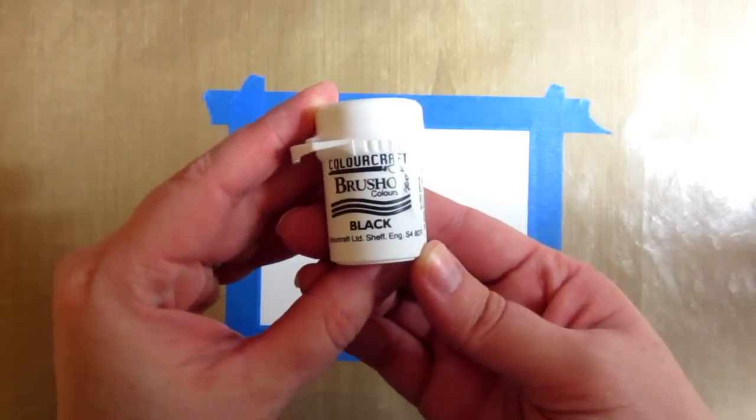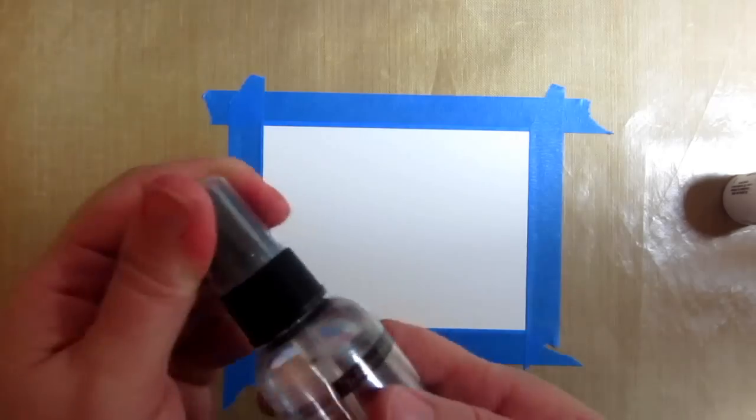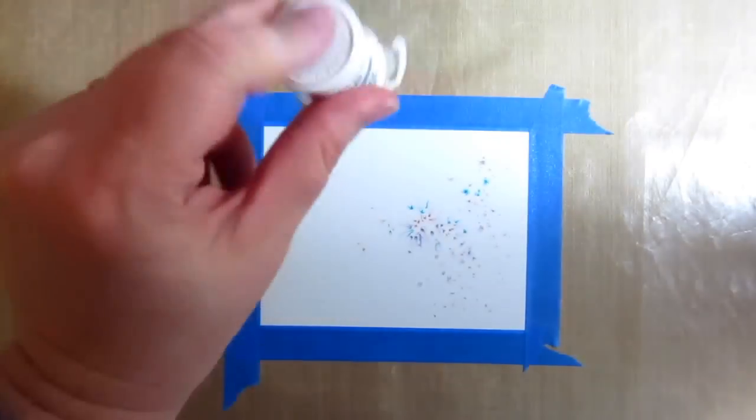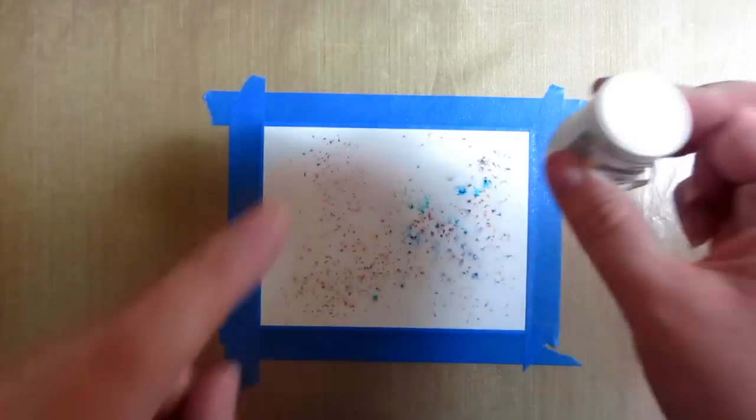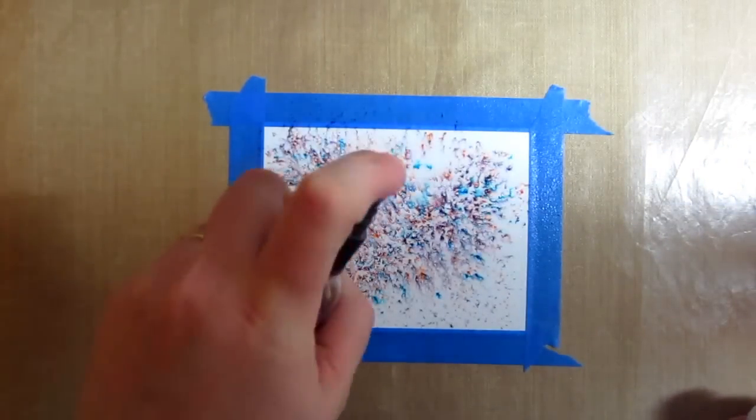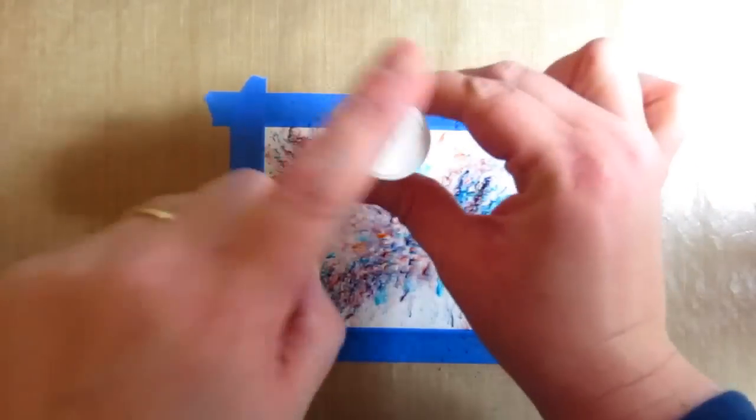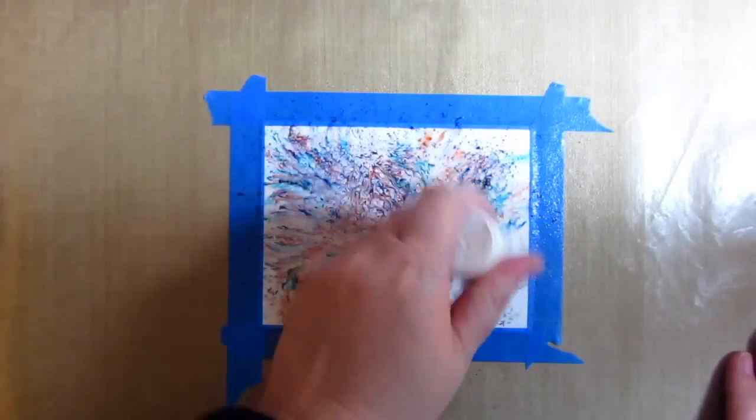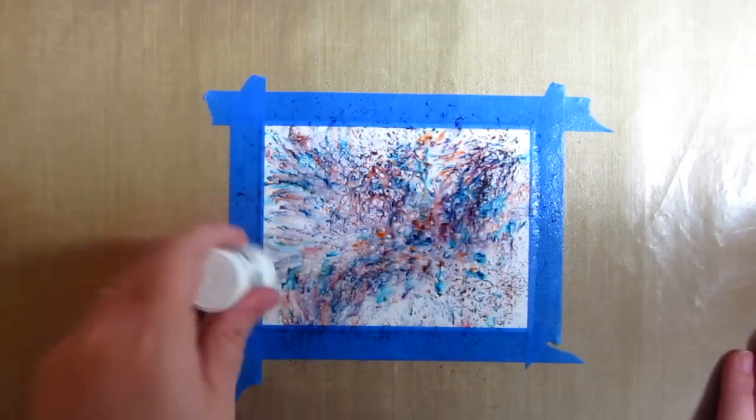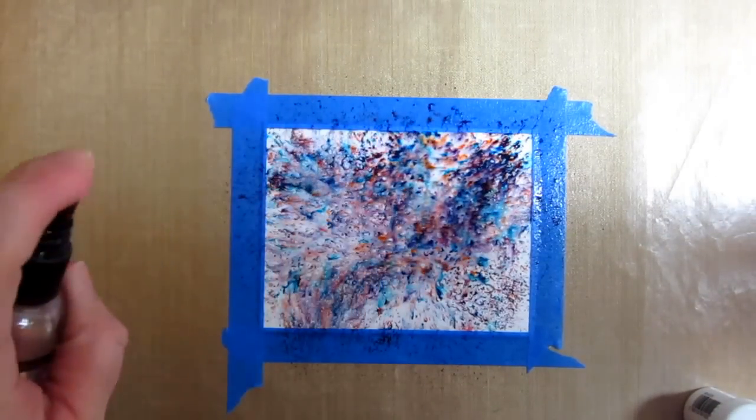I've taped a piece of Tim Holtz watercolor cardstock down to my craft mat with some painter's tape. Now I'm going to take this black Brusho and a mini mister, and I'm going to give my paper a good spritz. Then I'm going to begin tapping the pigment onto the paper, and you're going to see that the colors are going to burst and flame out kind of like fireworks. It's a really cool effect. I love this black because it has so many colors incorporated—oranges, blues, and purples—and it just makes for a beautiful night sky.